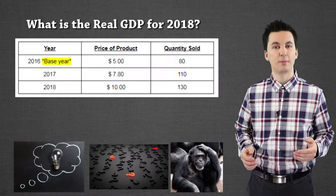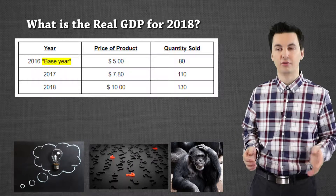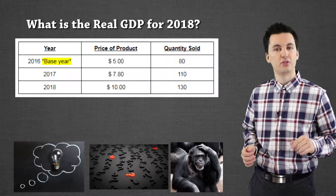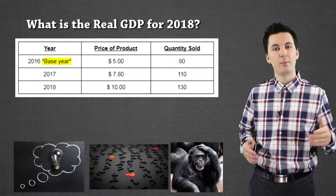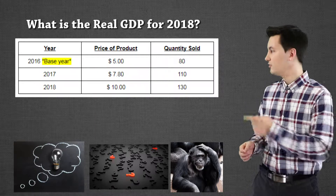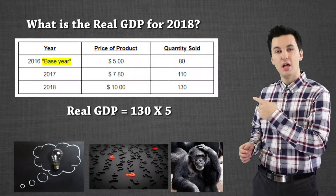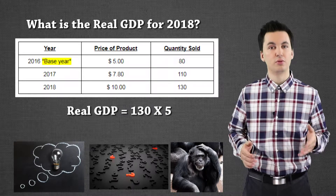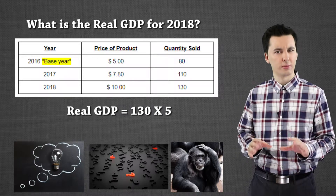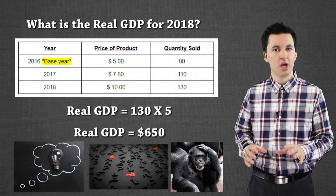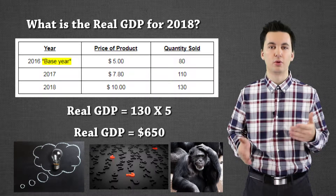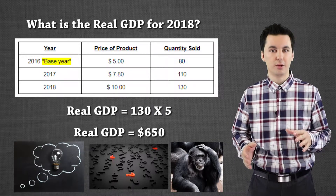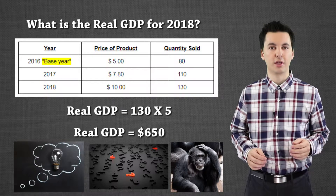If I want to find out what my real GDP is, I'm going to take my quantity demanded for 2018 and I'm not going to times it by the price of 2018. I'll times it by my base year price, which is 2016. So what happens then is I will get the real GDP for 2018. This is a small example just showing how to do real GDP on a smaller scale problem.